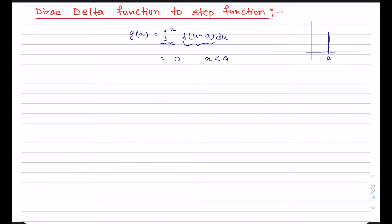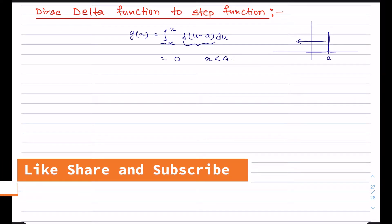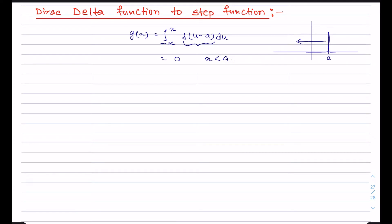So if x lies in the region less than a, this integration will not include the peak and the value of the integration will be zero. But for x greater than a, we know that the area under the delta function is one (unity). So for x greater than a, the value of this integration will be one. We can think of it as a step function.